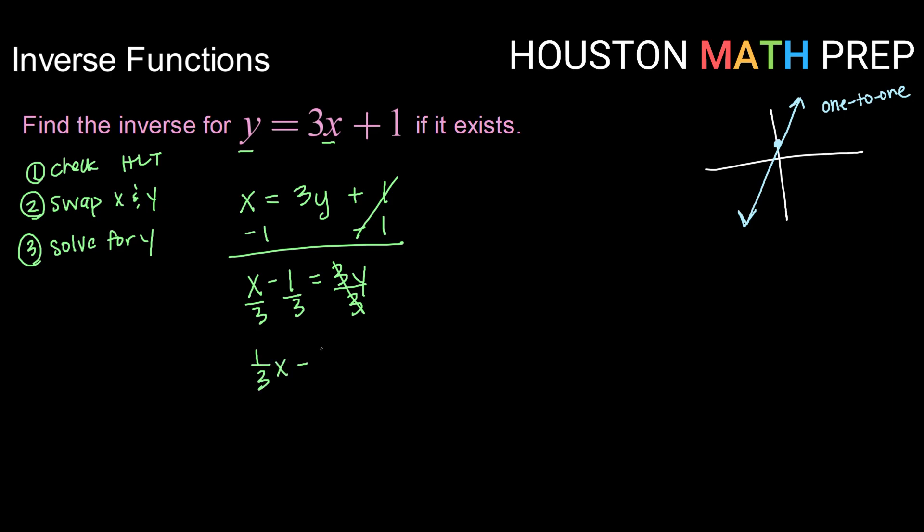And then finally divide both sides by 3. So that gives me one-third x minus one-third equals y and this is my inverse of y equals 3x plus 1. So again this is the inverse of this guy up here.